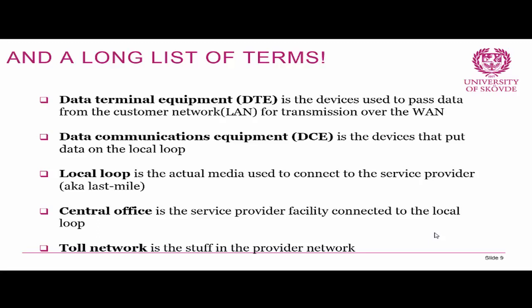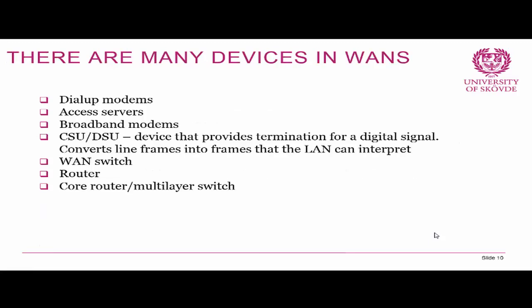A wide-area network is just another network, so of course there are many different devices, including dial-up modems, access servers, broadband modems, CSU/DSUs — which are devices that provide termination for digital signals and convert line frames into frames the local area network can interpret, since layer 2 frames can look different using WAN technologies versus LAN technologies — wide-area network switches, routers, core routers, and multilayer switches.